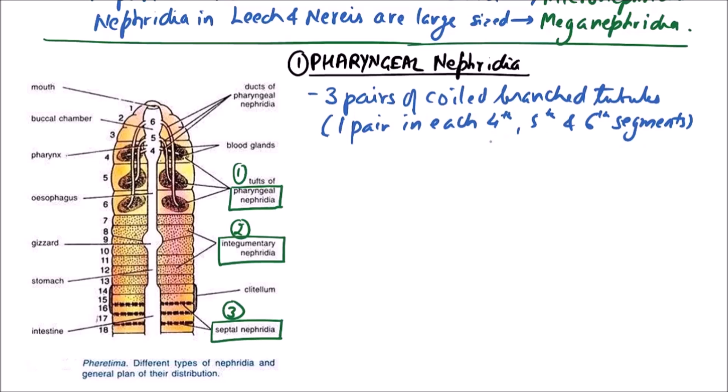Ducts from fourth and fifth segment open in pharynx. While from sixth segments open in buccal cavity.